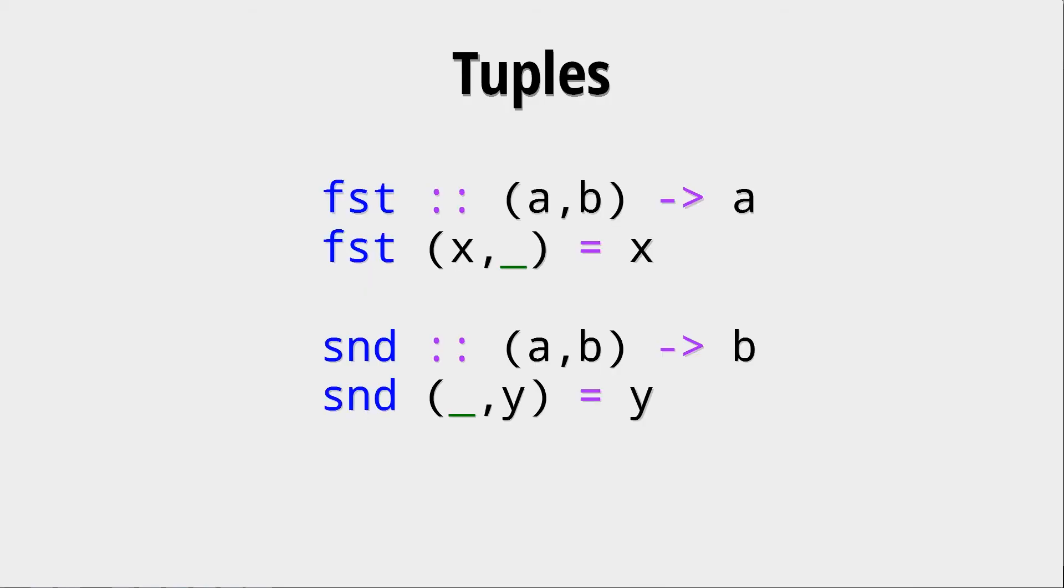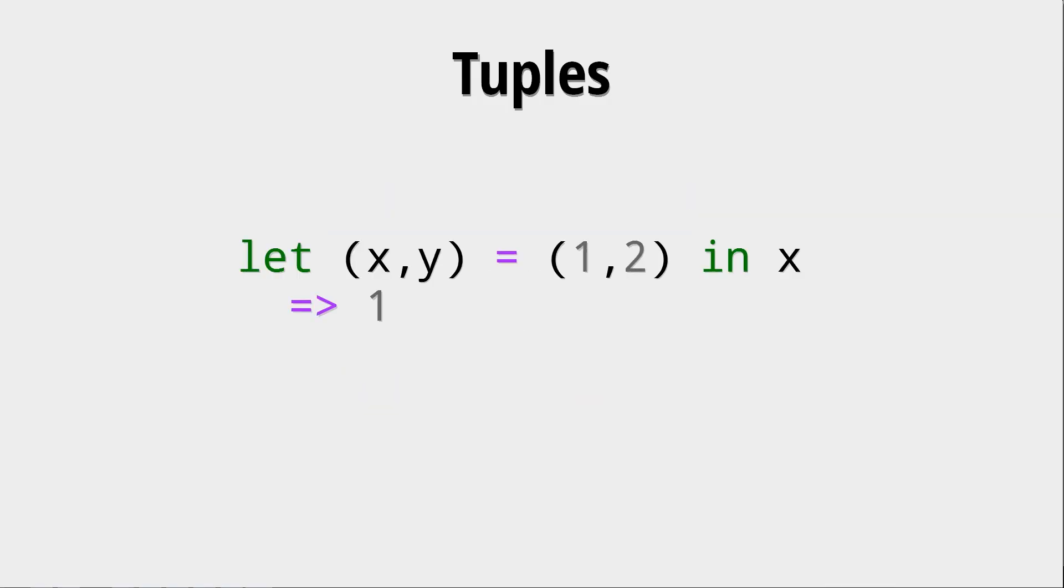Those tuples can be used also in pattern matching, where for example you can build this fst and snd function. Those are already within Haskell so you don't have to define them yourself, but here we can see how pattern matching works on tuples. This sort of pattern matching can also be done in bindings like let bindings or where bindings, where you can split tuples you have with such a binding. Like saying that x and y are 1 and 2, so now x is 1 and y is 2.